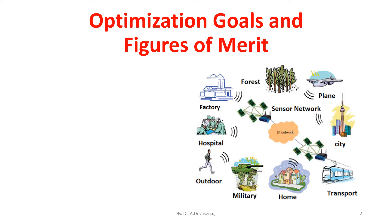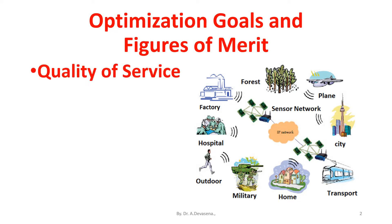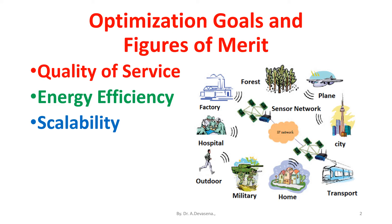Optimization goals and difficulties of merit. For all the sensor network scenarios and application types, different forms of networking solutions can be found, while a general answer appears implausible considering the large variety of possible applications. A few aspects are fairly evident: quality of service, energy efficiency, scalability, and robustness. We are going to discuss each of these topics in detail.